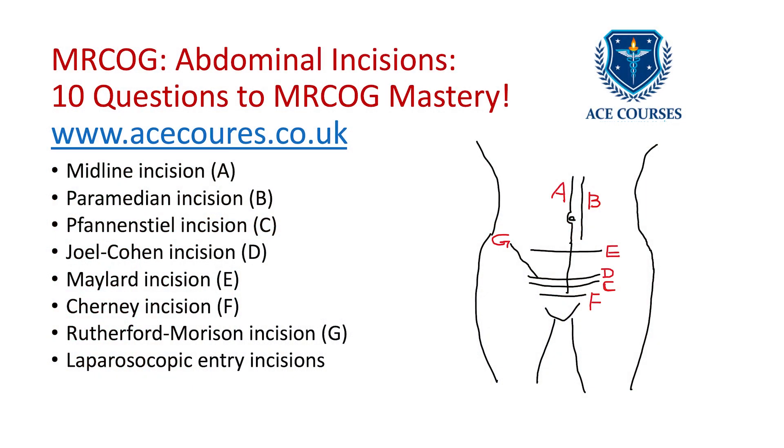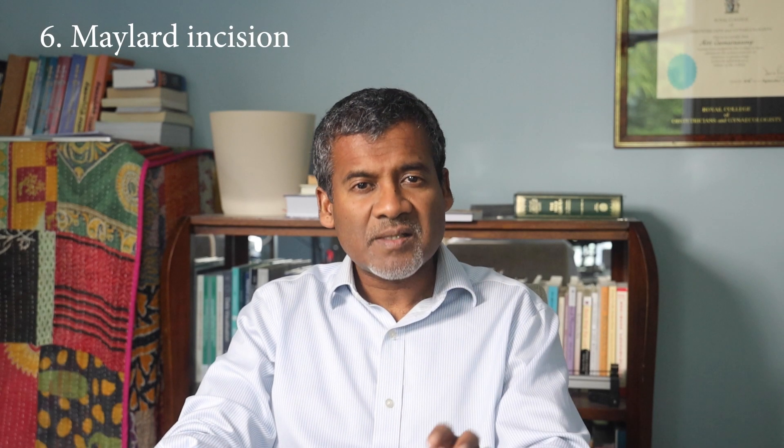Question six: what is a Maylard incision? It is another transverse incision, marked E in the diagram, about 5 to 8 centimetres above the pubic symphysis. The key step here is that we cut the rectus muscle transversely to give wider access to the pelvis. It can be useful for gynaecological cancer surgery. The Maylard incision gives better access to the abdomen compared with other transverse incisions, but is still not as good as a vertical incision for access.